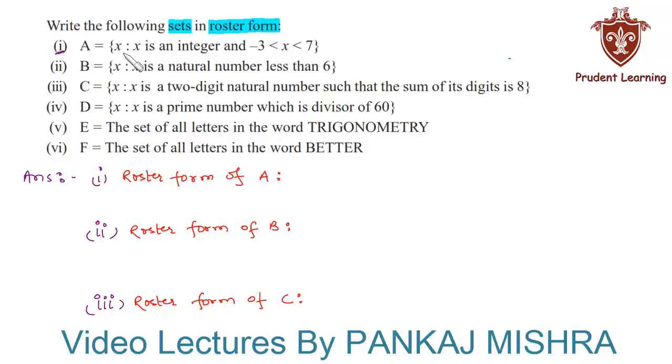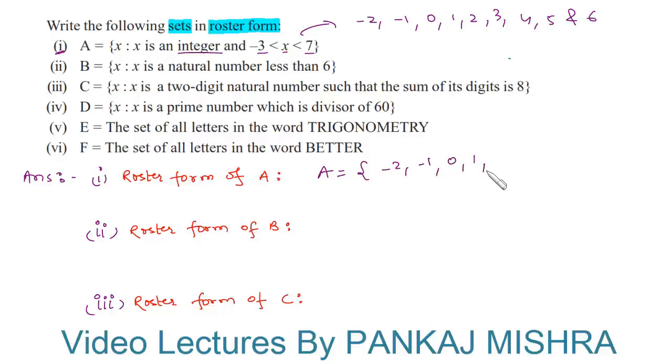Set A is equal to x such that x is an integer and x lies between -3 and 7. Since x is an integer and it lies between -3 and 7, the possible values of x are -2, -1, 0, 1, 2, 3, 4, 5, and 6. These are the elements of set A.